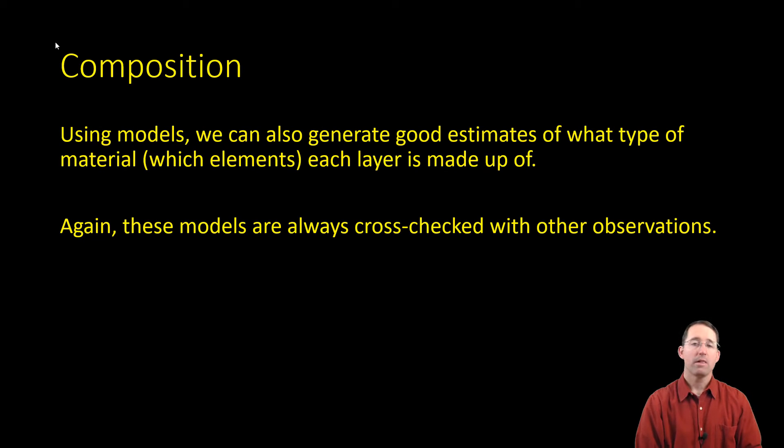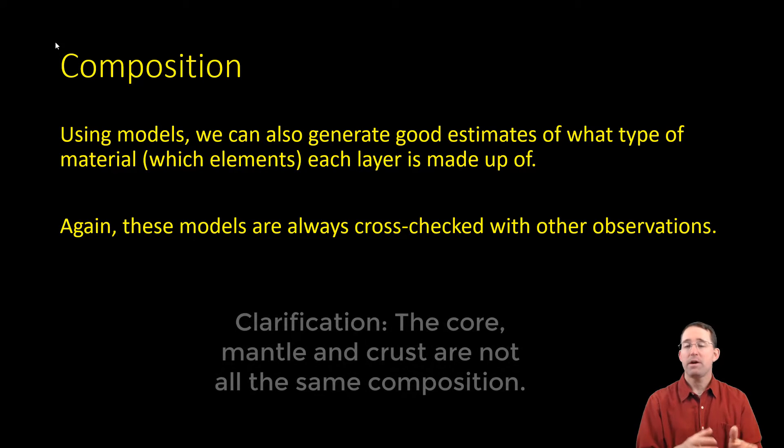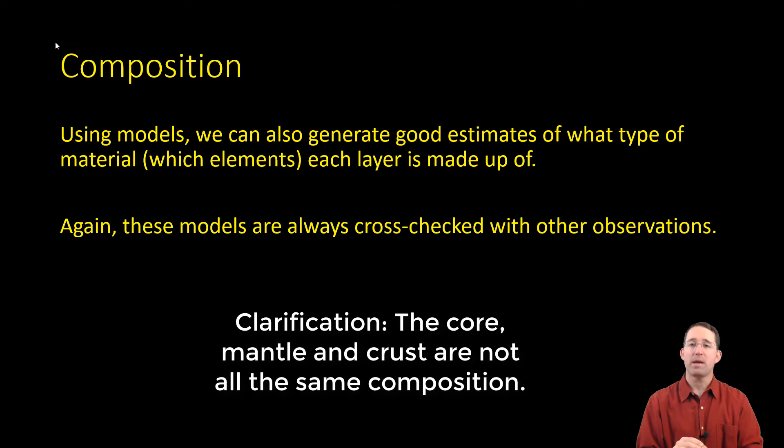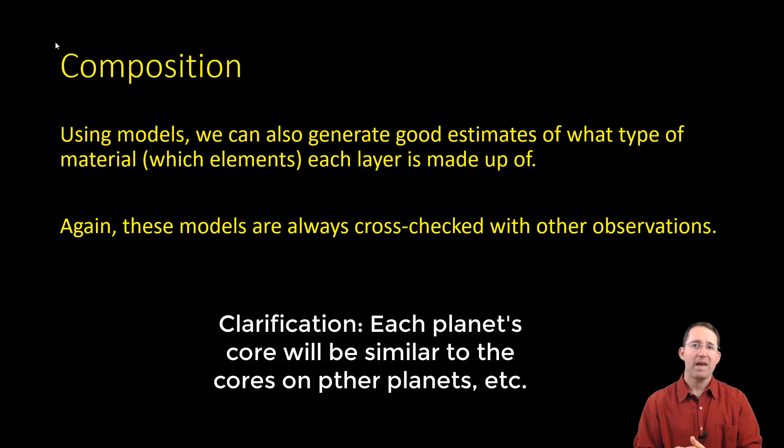Moving on from mass, let's look at a planet's composition. Again, this is done using mathematical modeling. We can get pretty good estimates of what is happening in each of the layers below a planet's surface. Remember that these models are always cross-checked with multiple observations. Now, what we've discovered about composition is that it's fairly similar across all the planets. Each of the various layers is going to have roughly the same composition. And we're going to look at that as we go through the different layers.